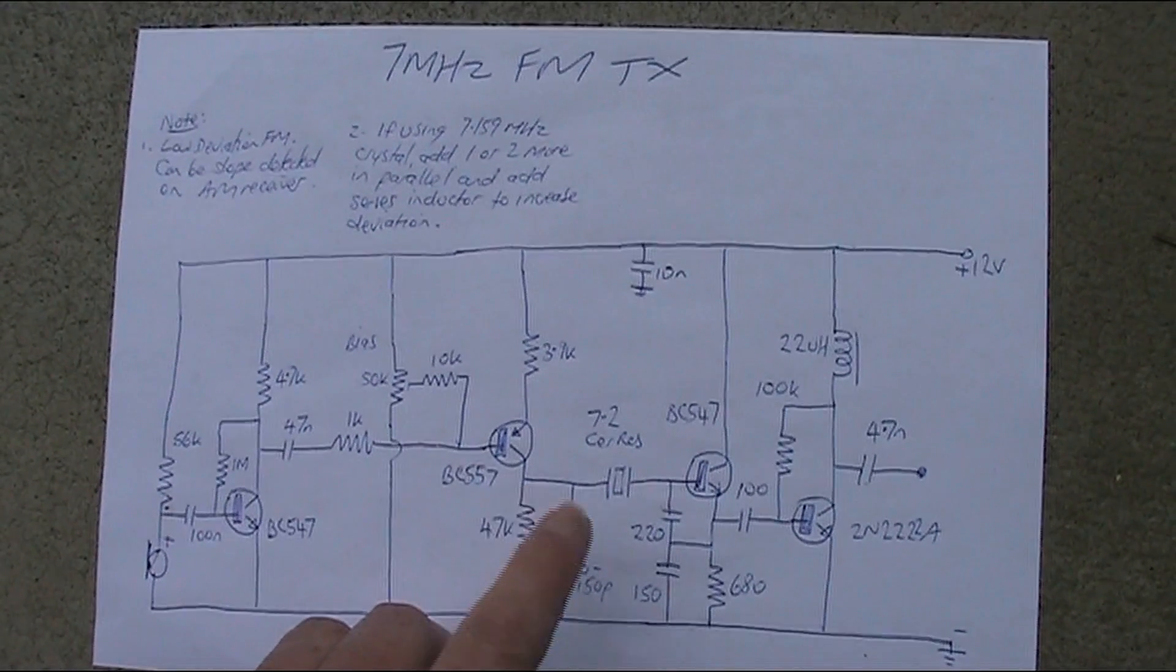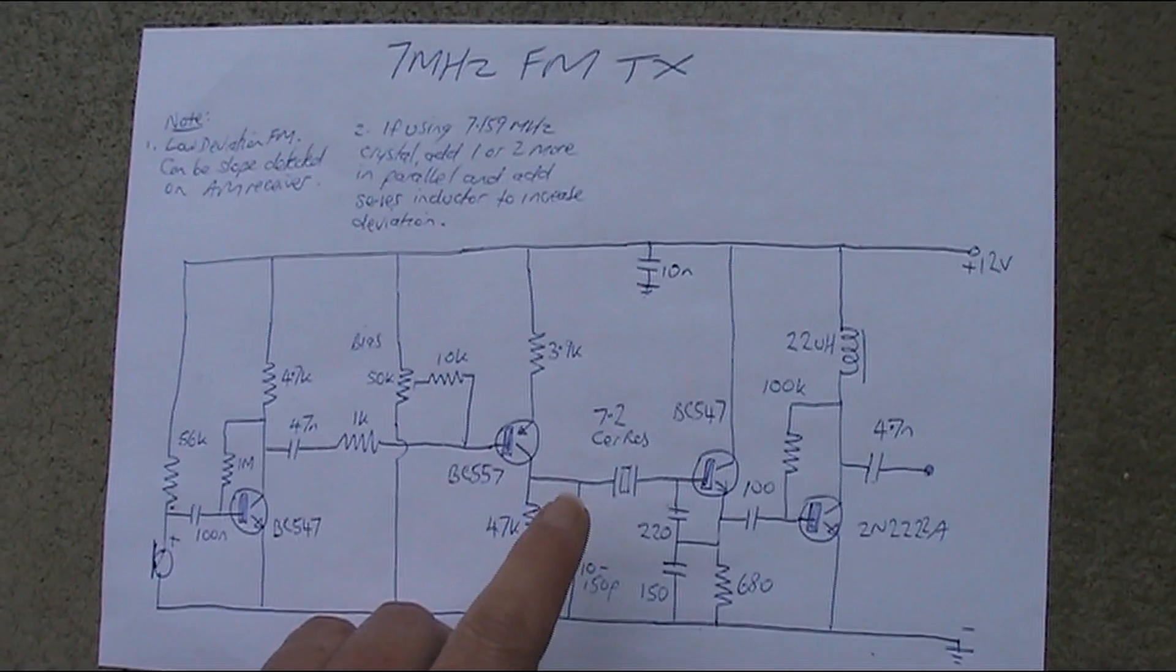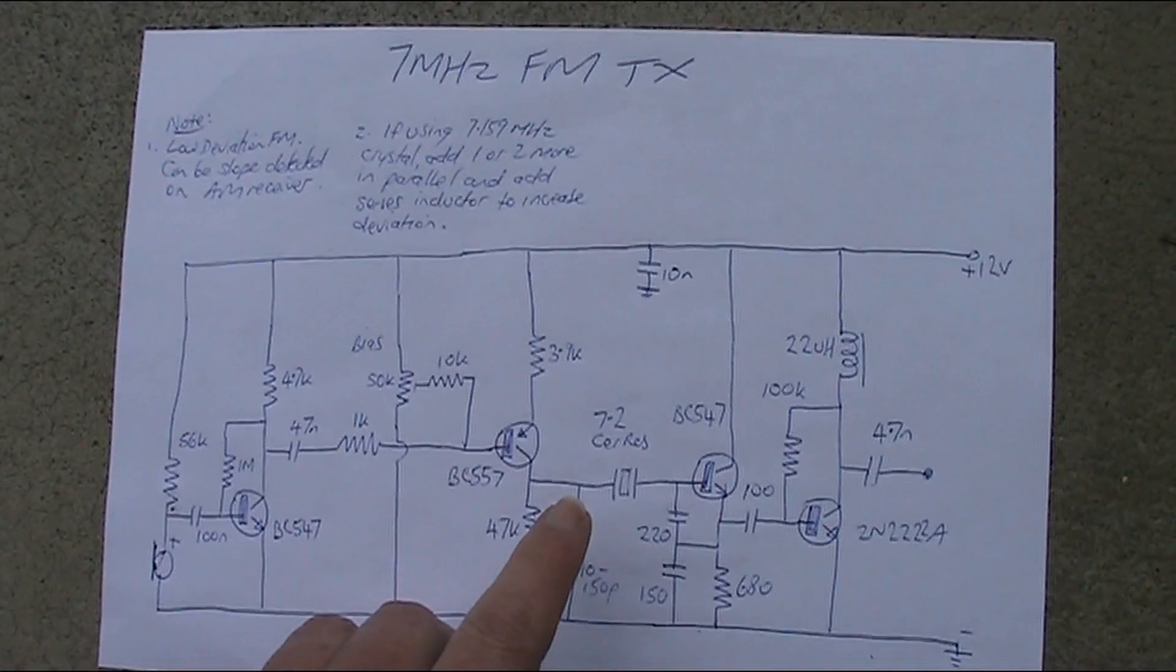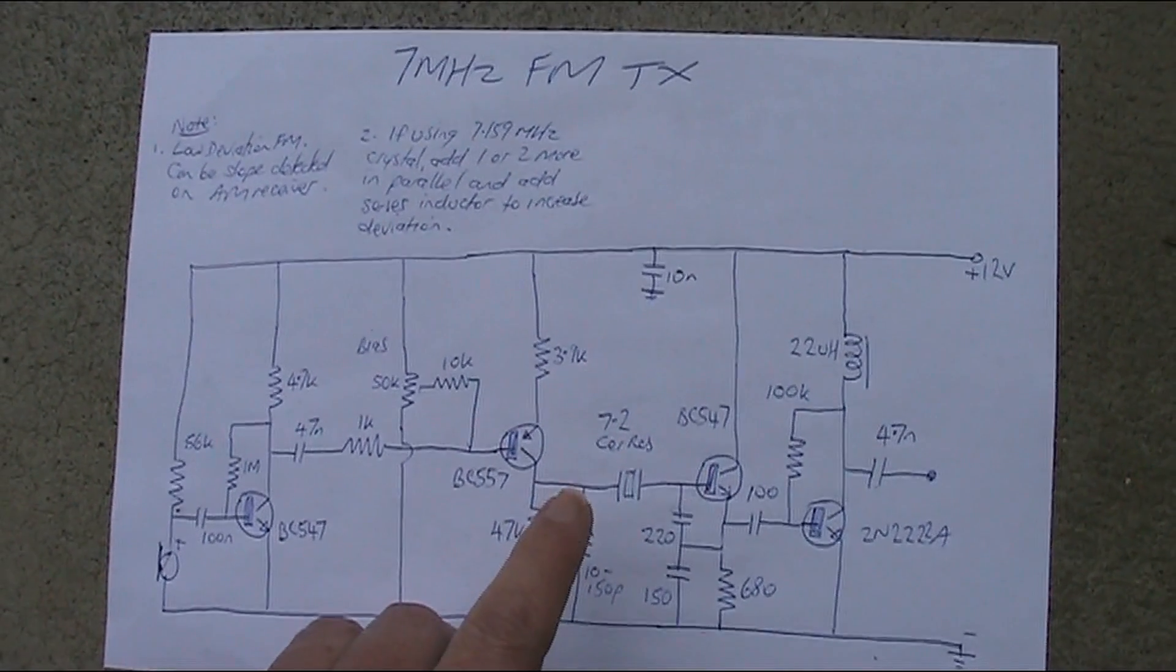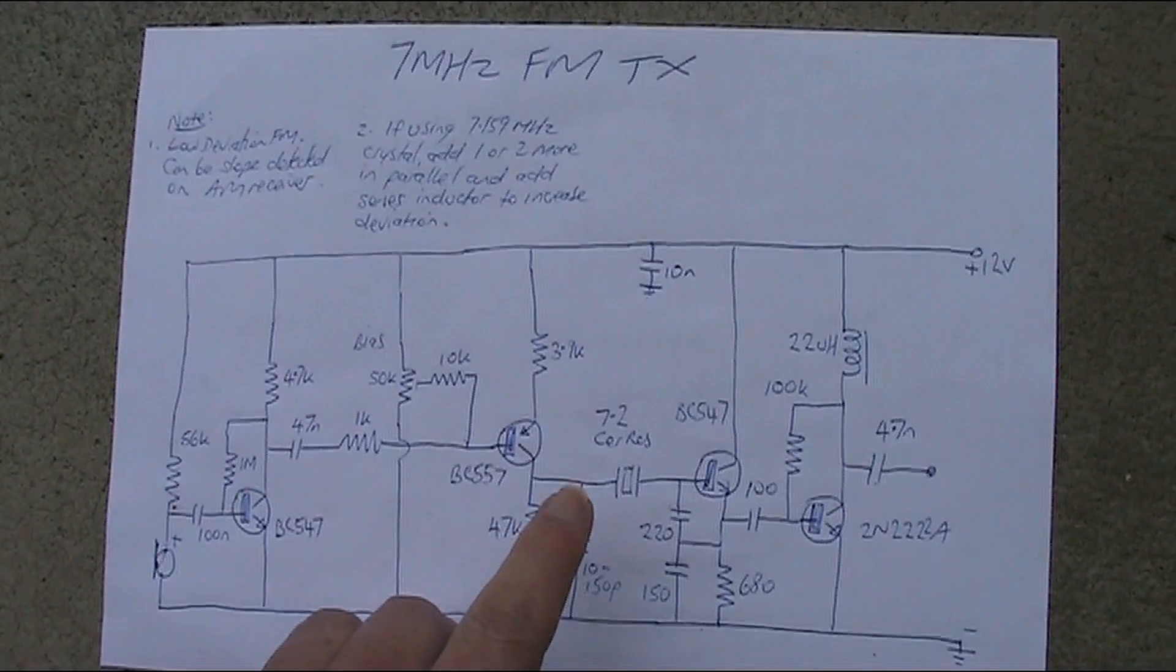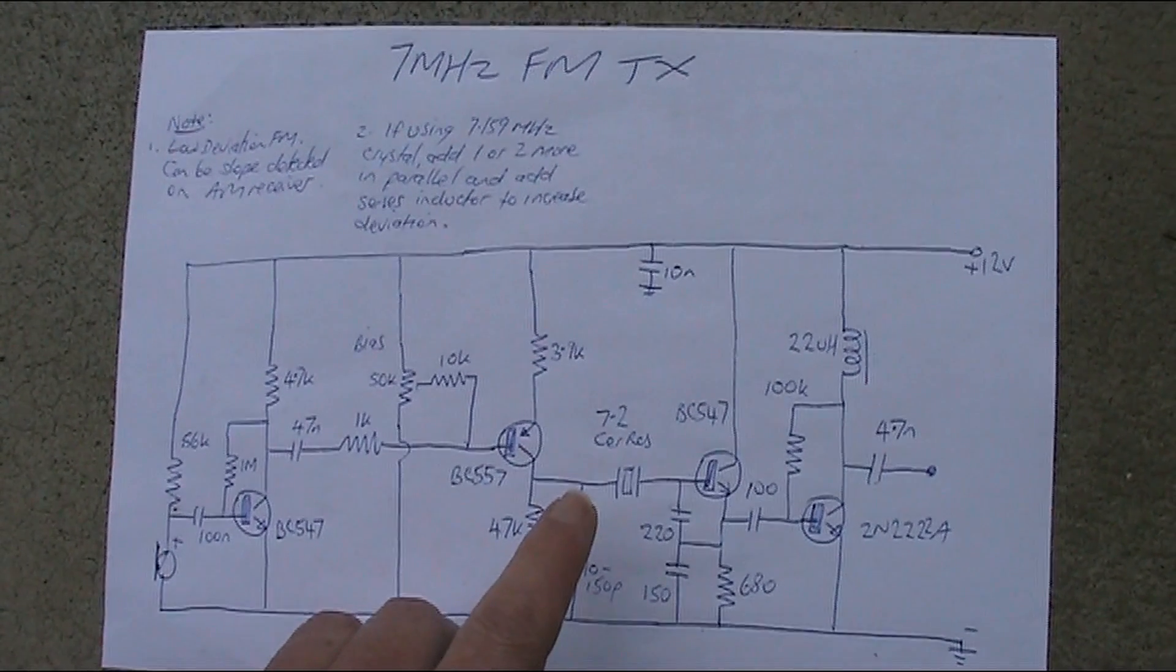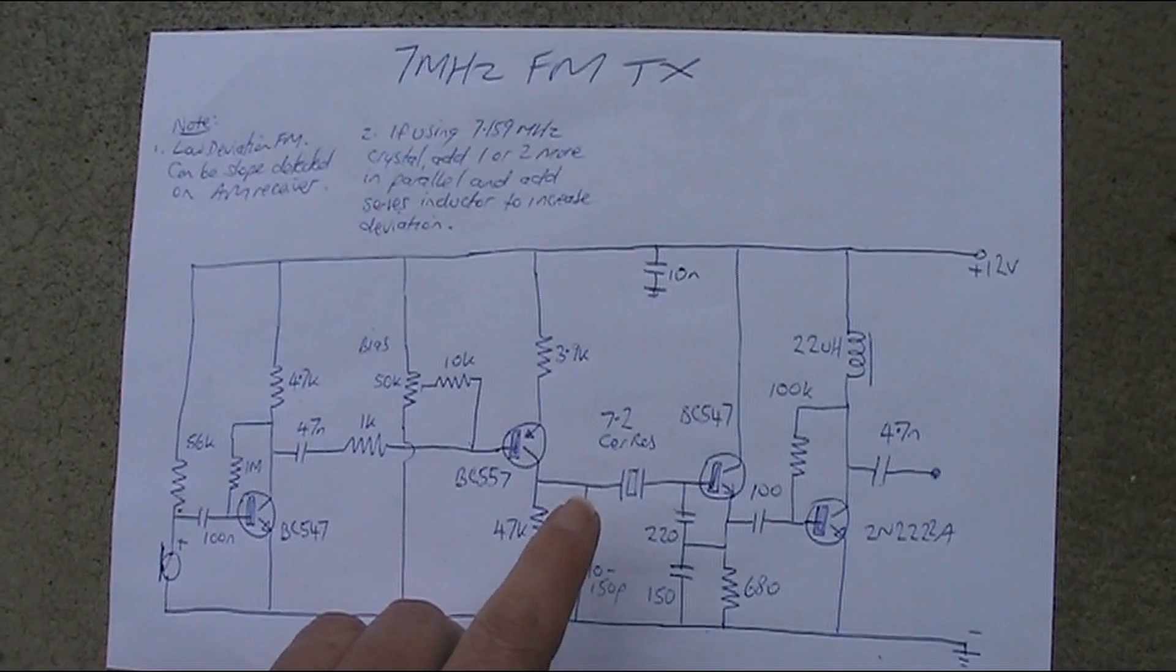You'll be able to get more pulling range with that. Possibly not as much as a ceramic resonator, but it will still work enough for you to hear the signal if slope detected on an AM receiver.